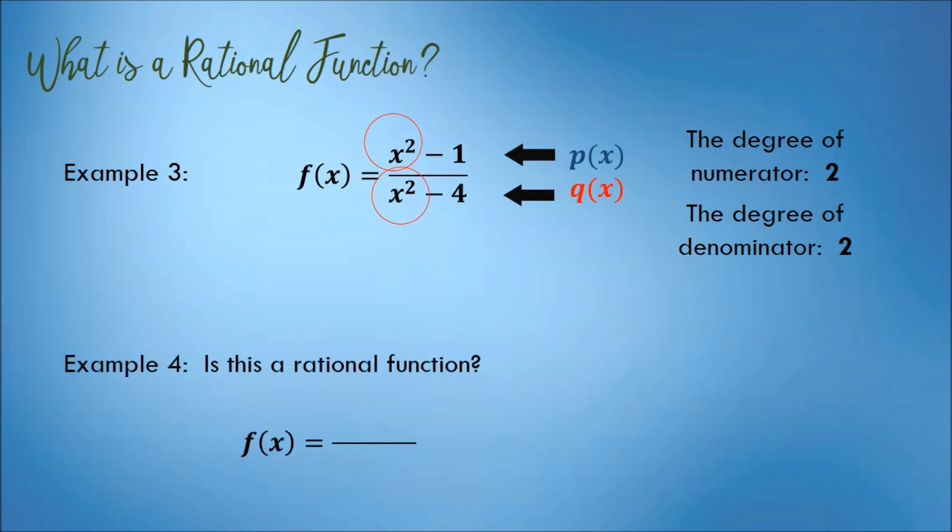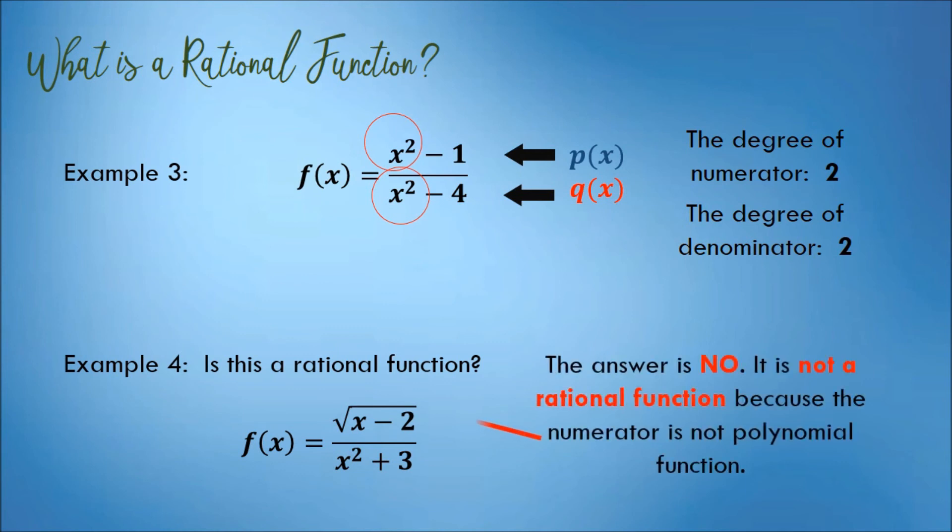How about this one? Is this a rational function? We have f(x) equals the square root of x minus 2, all over x squared plus 3. The answer is no. This is not a rational function because the numerator is not a polynomial function. It has radical in the expression.